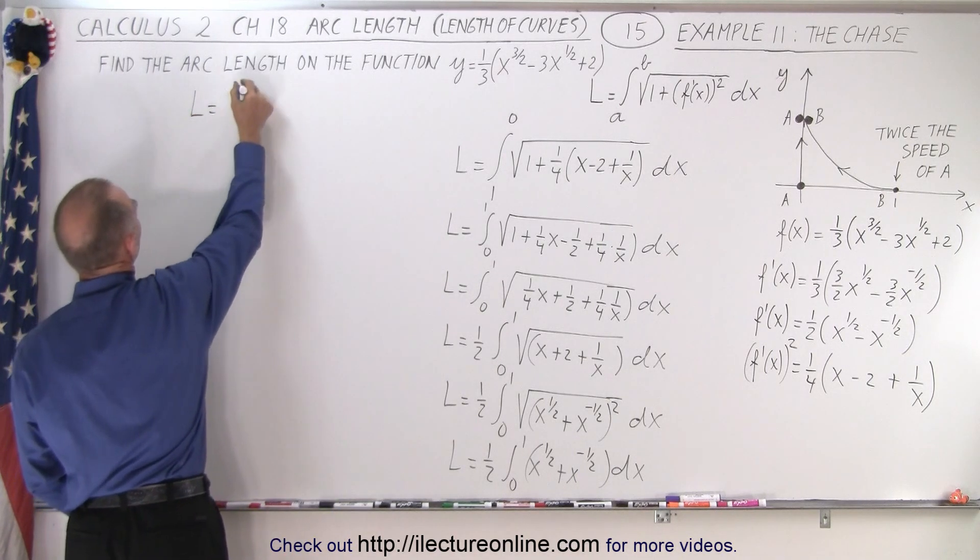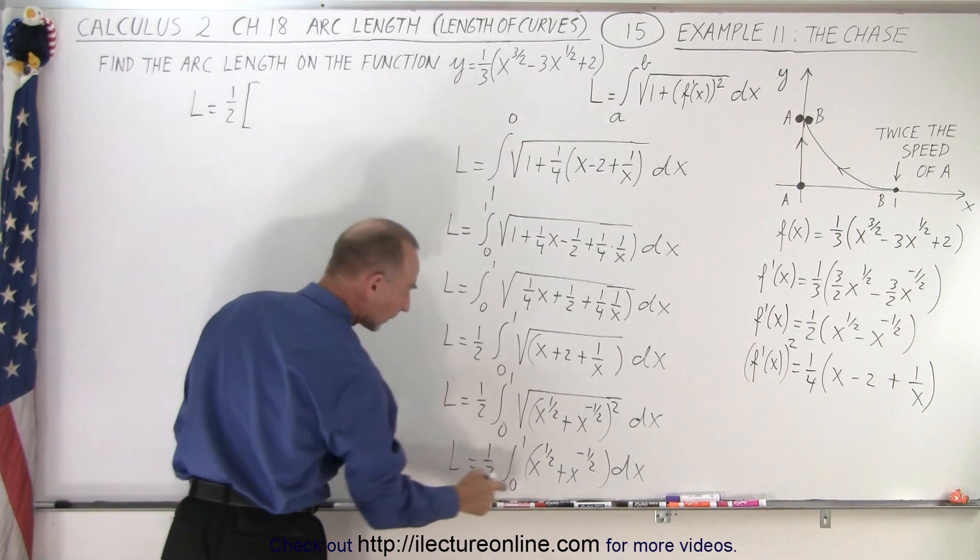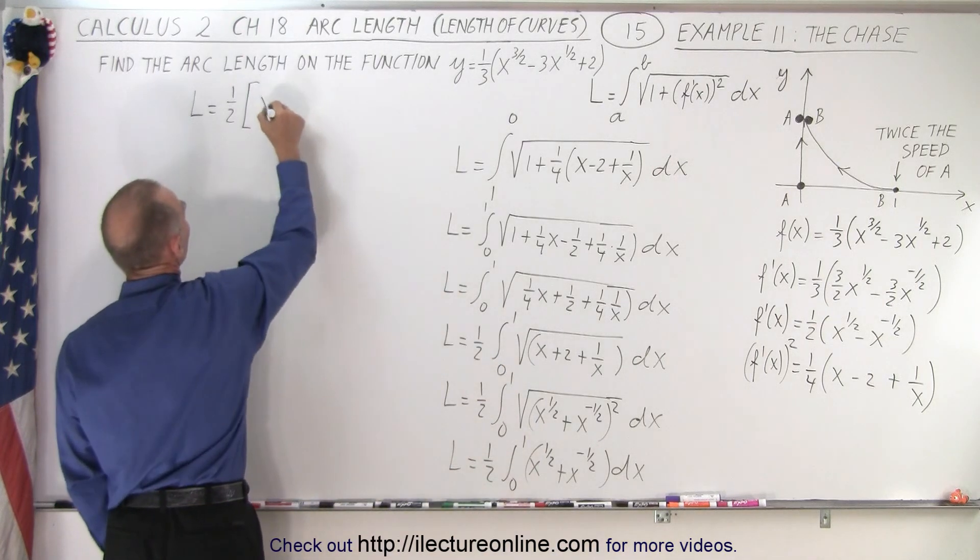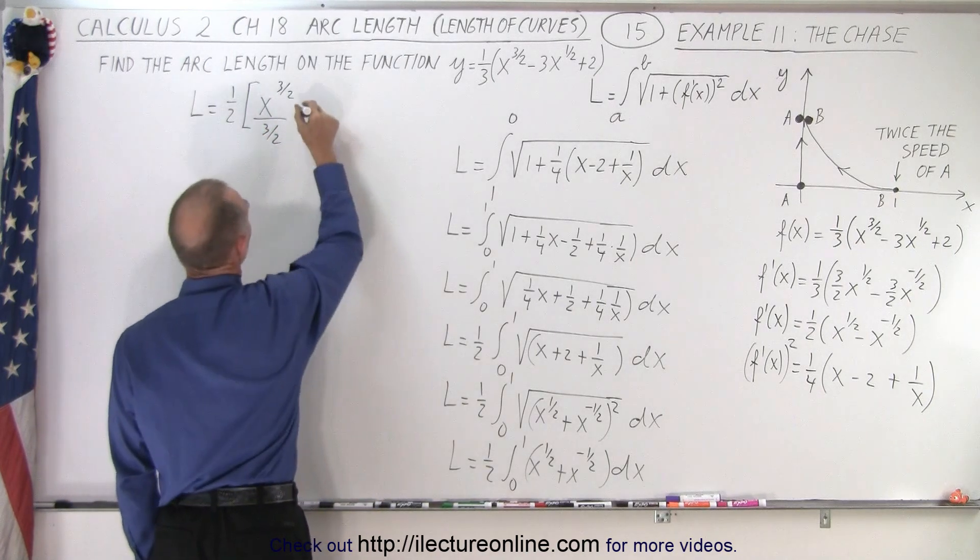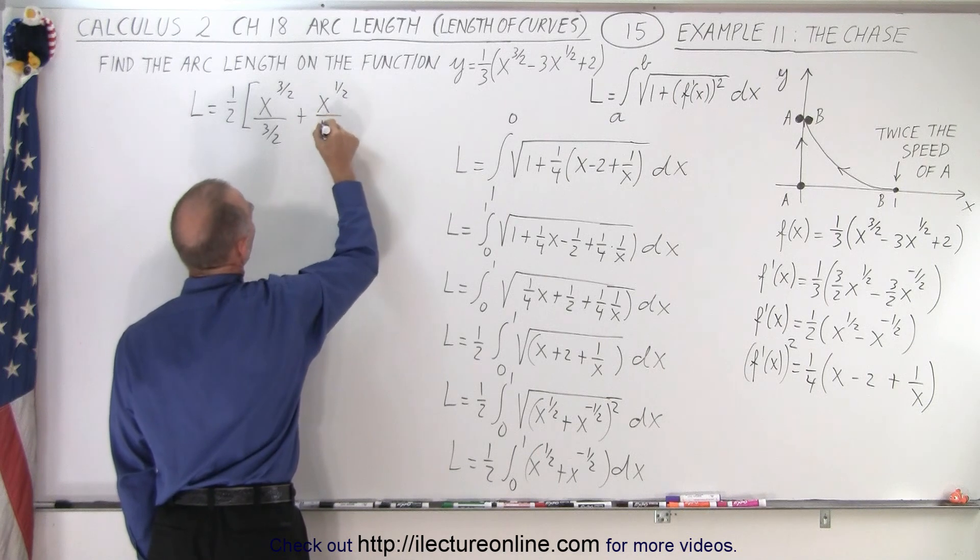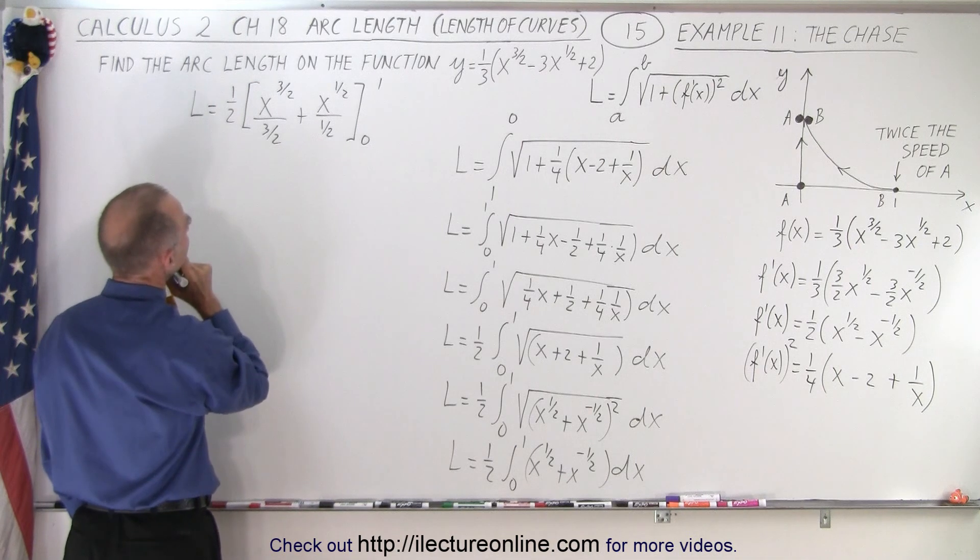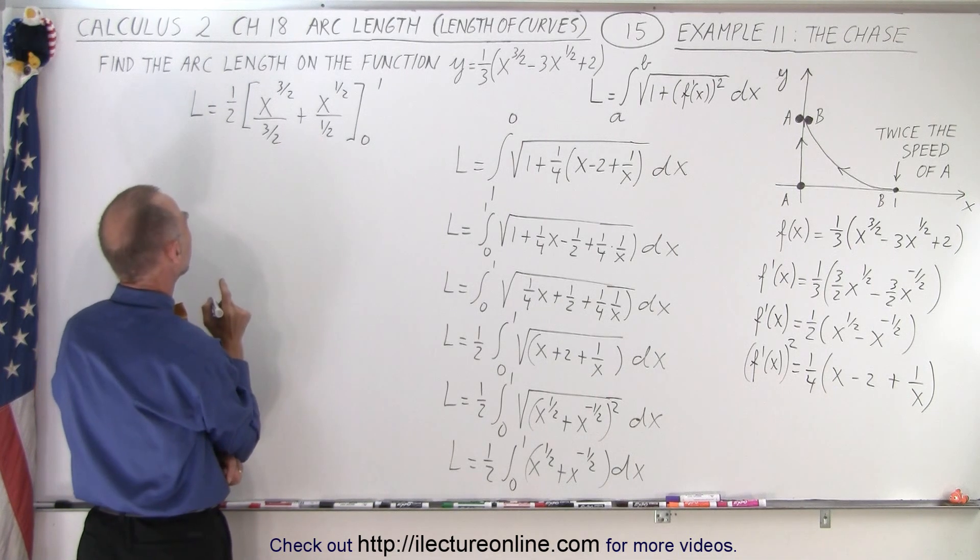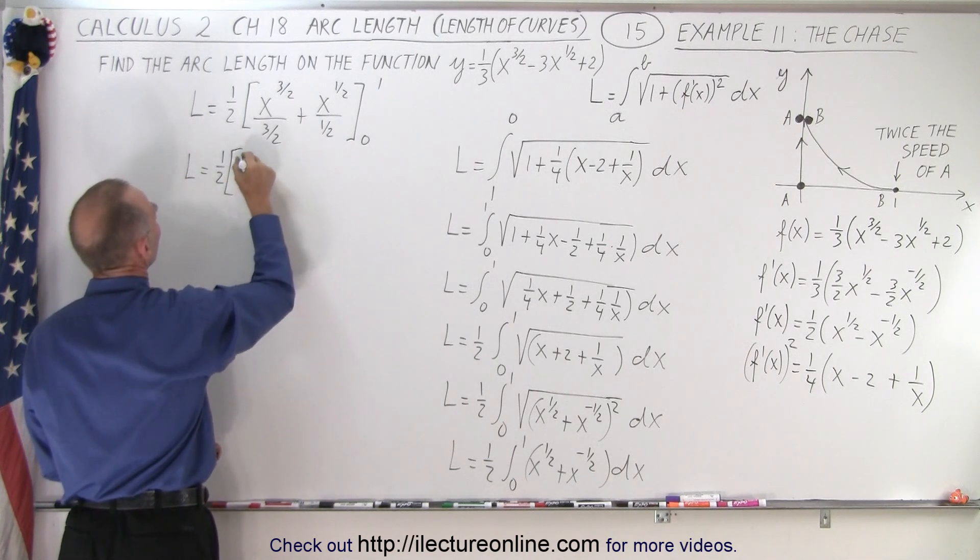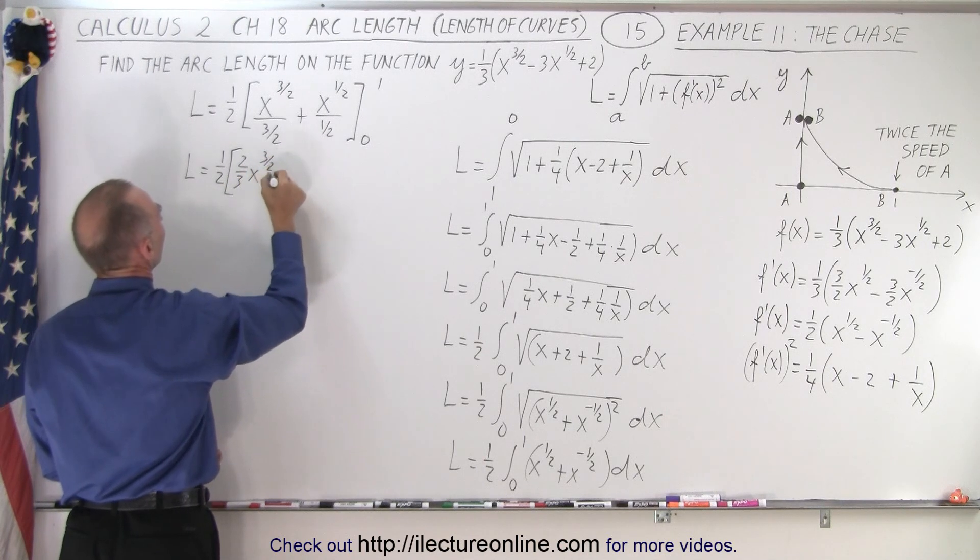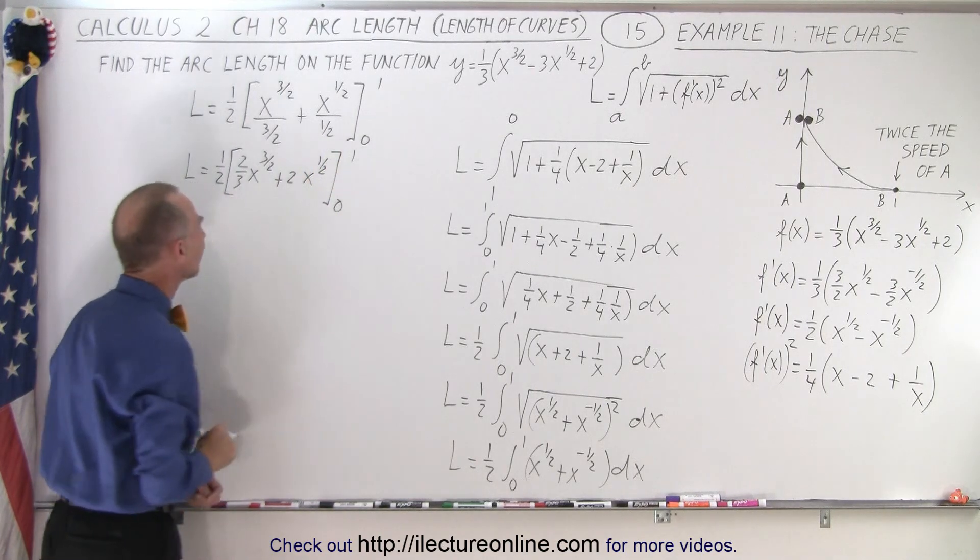We have L is equal to, I think we still have the one-half in the front, so one-half times x to the one-half, that becomes x to the three-halves divided by the new exponent three-halves plus x to the one-half divided by the new exponent one-half evaluated from zero to one. Okay. Can I simplify this a little bit? Yeah, let's do that. So L is equal to one-half times, this becomes two-thirds x to the three-halves plus two x to the one-half evaluated from zero to one. So that's a little cleaner that way.